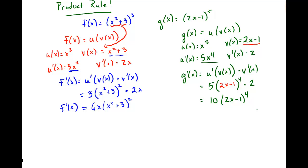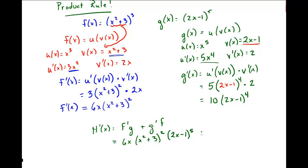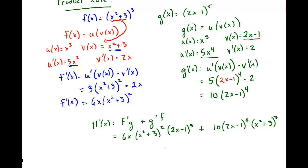That's a lot of work, and I still haven't used the product rule yet. The product rule says h prime of x equals f prime times g plus g prime times f. Plugging in: f prime is 6x times x squared plus 3 squared, times g which is 2x minus 1 to the fifth, plus g prime which is 10 times 2x minus 1 to the fourth, times f which is x squared plus 3 cubed.